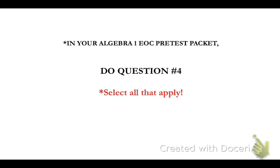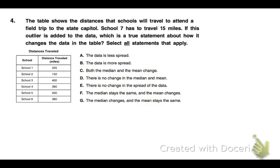Now go to your EOC pretest packet and turn to number four and let's work that together. The table shows the distances that schools will travel to attend a field trip to the state capitol. School number seven, which is not in the table, only has 15 miles to travel, which is much less than the other schools. If the outlier is added to the data, which is a true statement about how it changes the data in the table? Select all the statements. So we need to do a bit of work to figure out these answers.